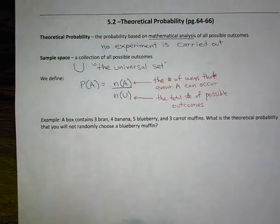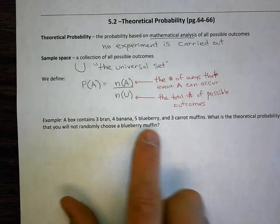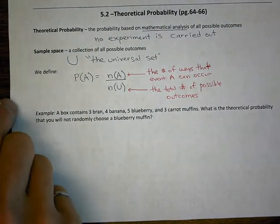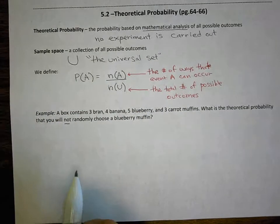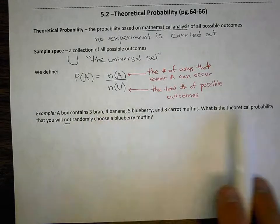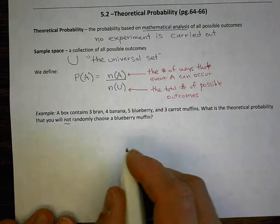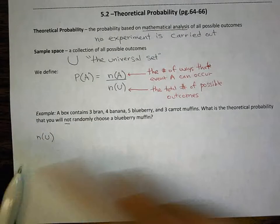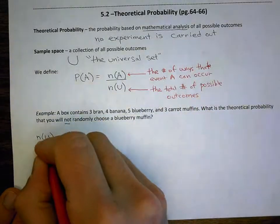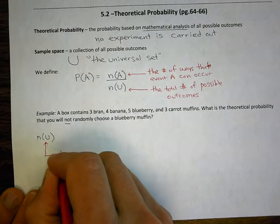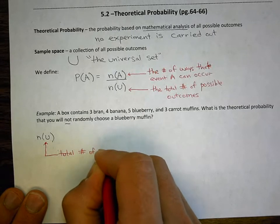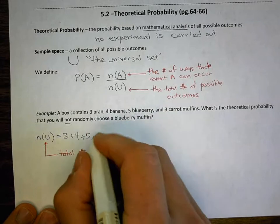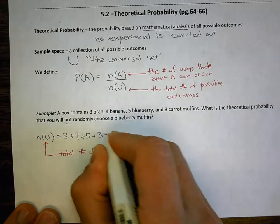Okay, so let's analyze the system. A box contains three bran, four banana, five blueberry, and three carrot muffins. This is delicious. What is the theoretical probability that you will not choose a blueberry muffin? Just be careful, not choose a blueberry muffin. So, this is a system that we can analyze, because we know everything in the box. So, let's see if we can figure out the probability of not choosing a blueberry muffin. Okay, well, let's look at first the sample space, N U. Remember, this is the total number of possible outcomes. So, this would be the total number of muffins. Let's see. I have three plus four blueberry plus, sorry, four banana, five blueberry, plus three carrot. That gives me 15 muffins.